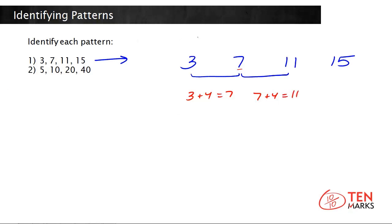So, this pattern is made by adding 4. In between each number, you add 4, and then you can generate the next numbers further from 15 on.